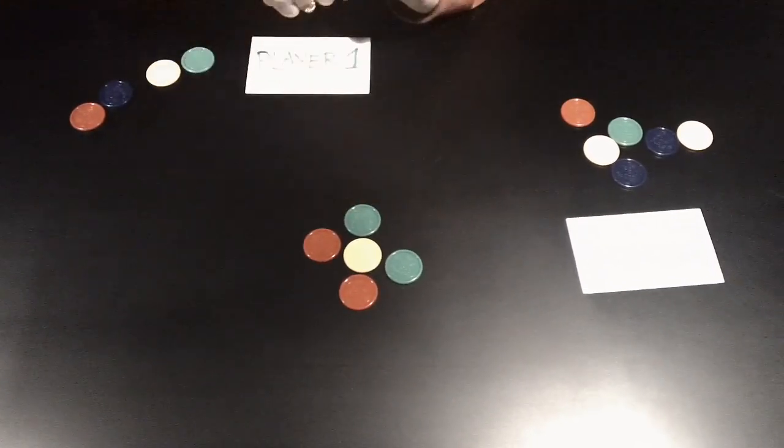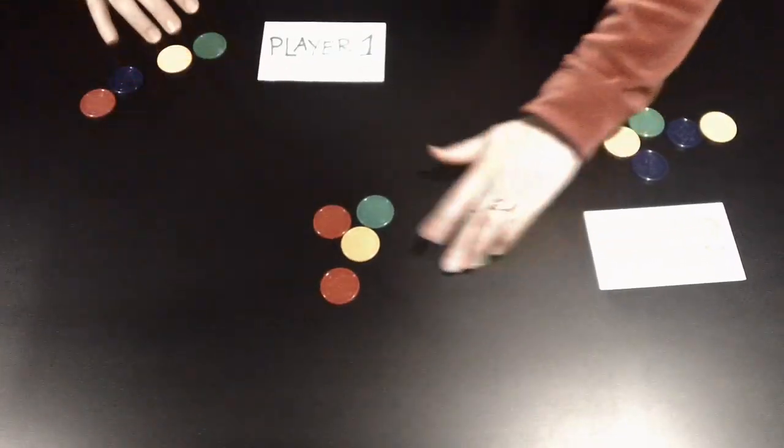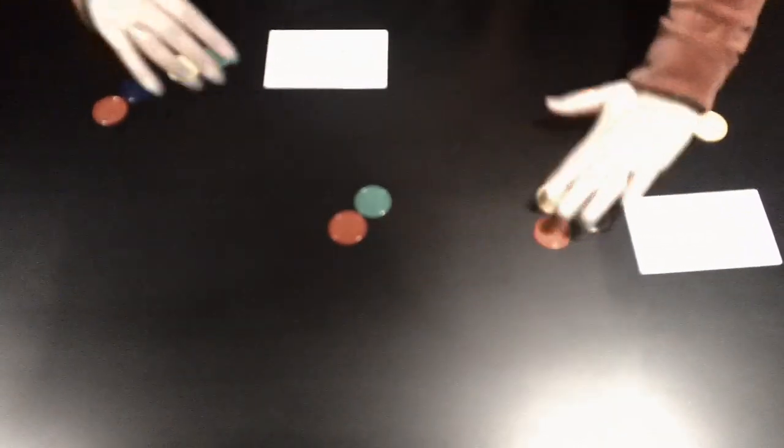Because if your opponent is facing five, they can take one and you can take three. Or they can take two and you can take two. Or they can take three and you can take one. And they always get the last one.